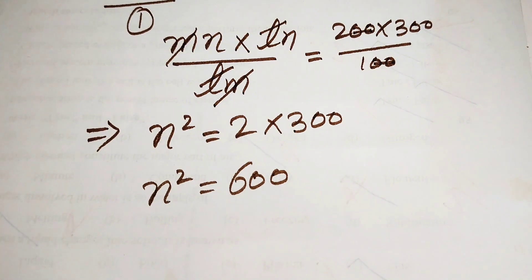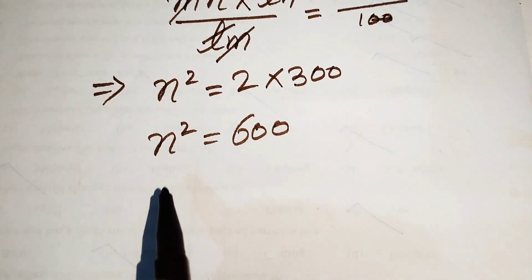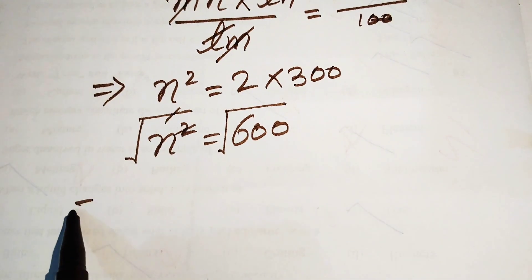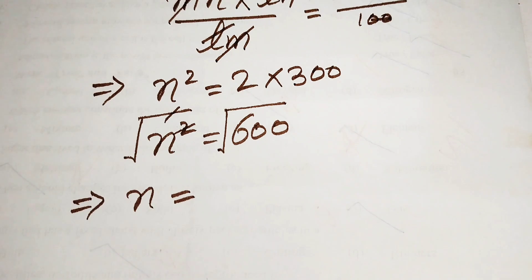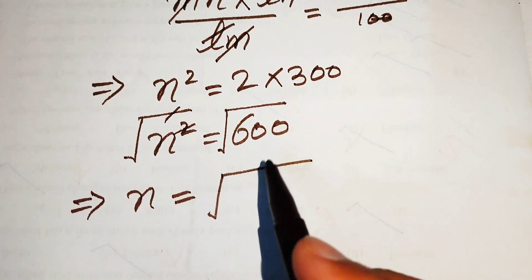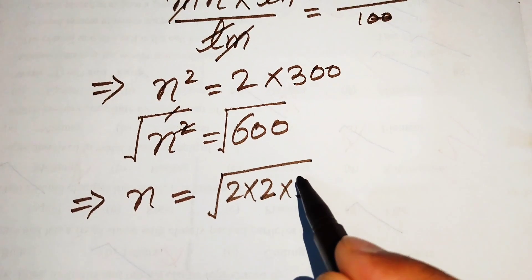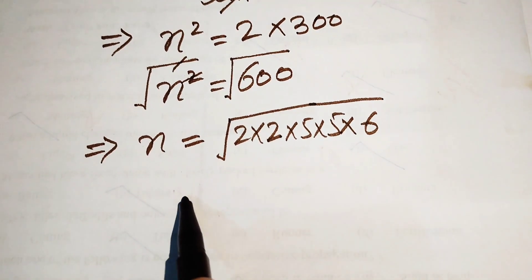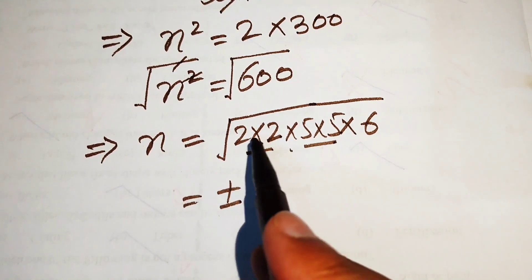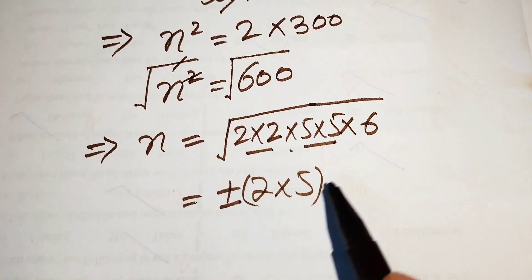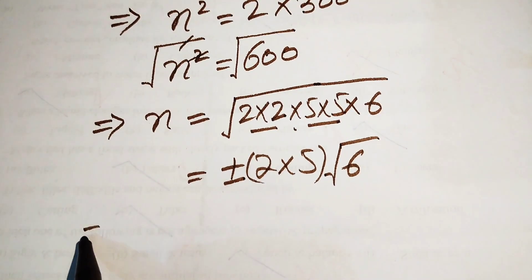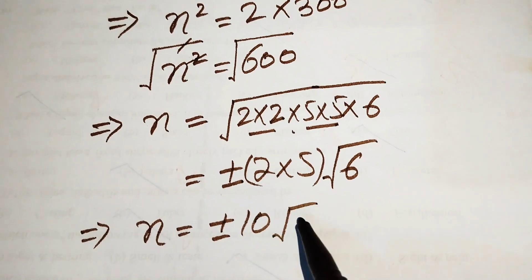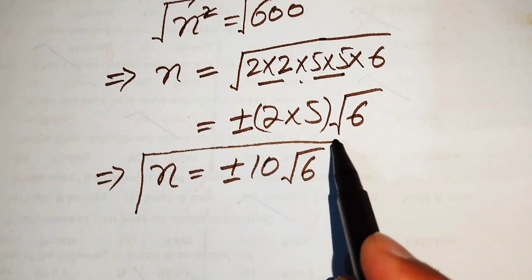So N squared equals 600. We need to find the value of N, so we take the square root on both sides. The square and square root cancel and we get N equals. We write 600 in simplified form: 600 equals 2 multiplied by 2, multiplied by 5 multiplied by 5, multiplied by 6. Bringing outside the pairs: 2 multiplied by 5 into square root of 6. So N equals plus or minus 10 times square root of 6. These are the two values of N.